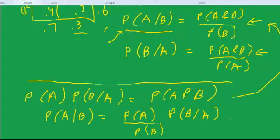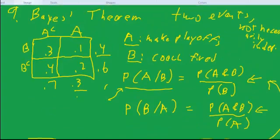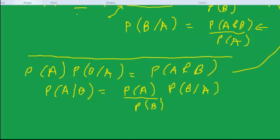This is what's known as Bayes' theorem. It says that if you know the conditional probability of B given A—which in our case is the probability the coach is fired if they make the playoffs—and you multiply that by the relative probabilities of making the playoffs versus the coach getting fired, you can get the reverse conditional probability: if the coach was fired, what does that tell you about the probability they made the playoffs?